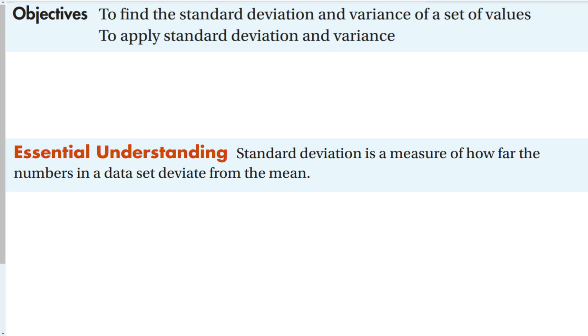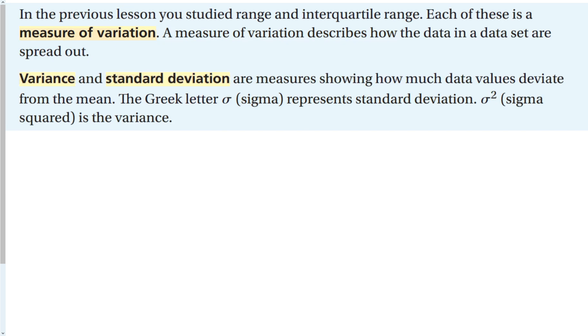The standard deviation is a measure of how far the numbers in a data set deviate from the mean. In previous lessons, we've studied range and interquartile range. Each of these is a measure of variation that tells you how much the data varies. A measure of variation describes how the data in the set are spread out.